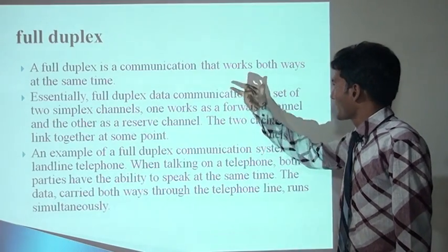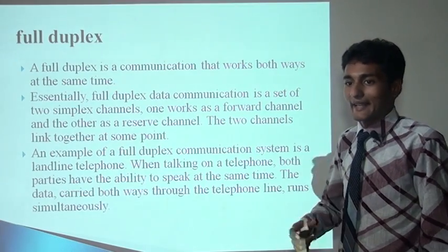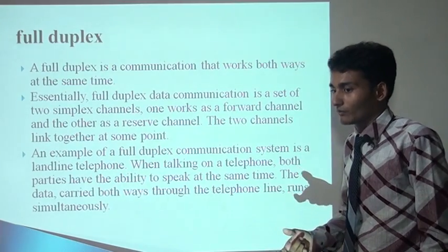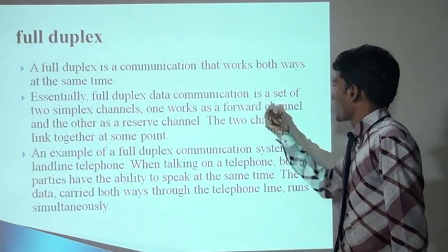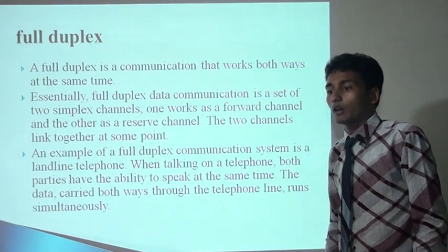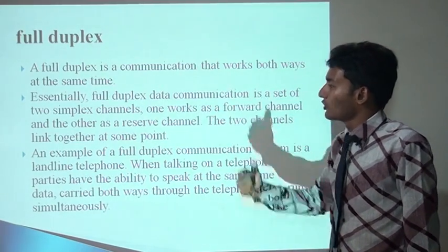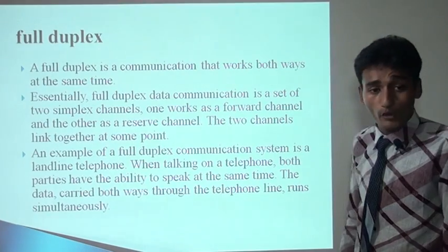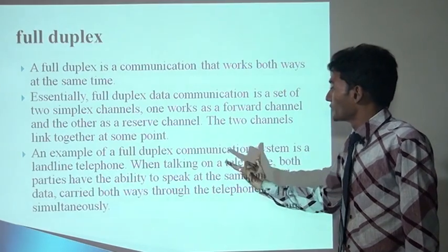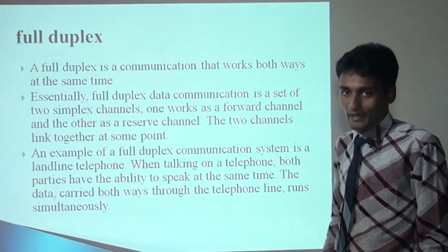In full duplex, communication works in both ways simultaneously. Full duplex is a data communication system of two simplex channels — one forward channel and one backward channel. There are two channels used in full duplex. For example, a home telephone landline — both parties can talk on the telephone with the ability to speak and receive the signal at the same time.